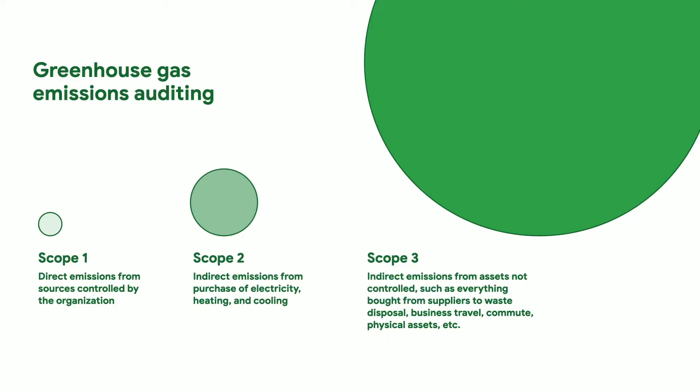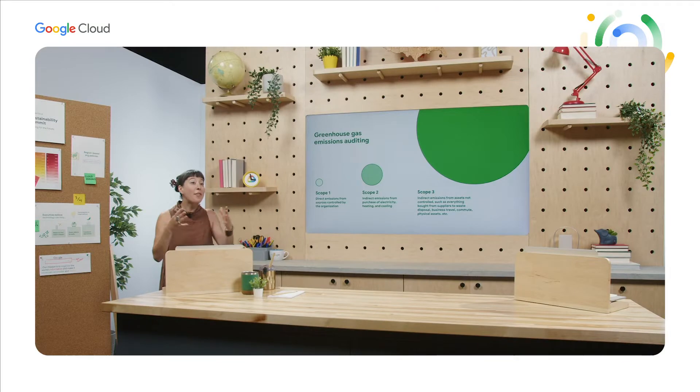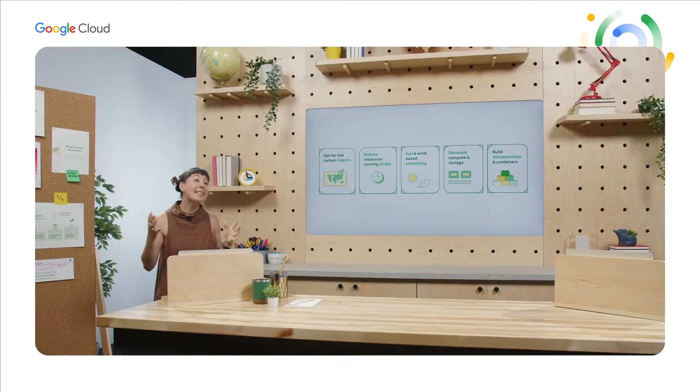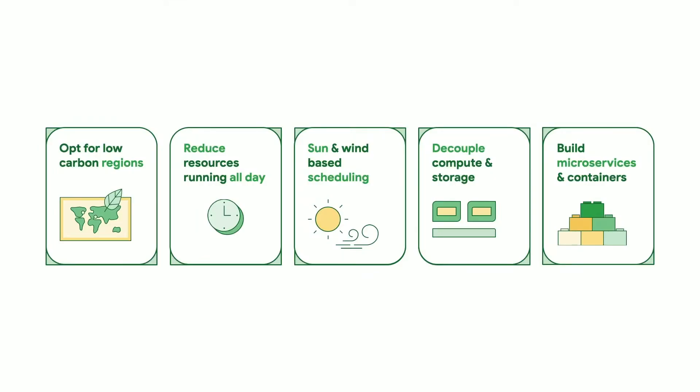Scope 1 and 2 relate to emissions specifically controlled by an organization. Scope 3 are an organization's indirect emissions, such as their suppliers' activities, their consumers' product usage, or effects from transportation and waste disposal, to just name a few. Once empowered with our carbon data, let's take action by diving into some strategies for reducing carbon emissions in your Google Cloud infrastructure.